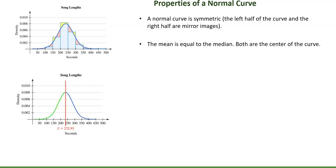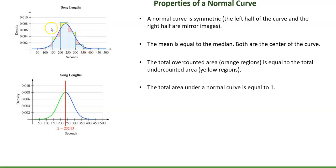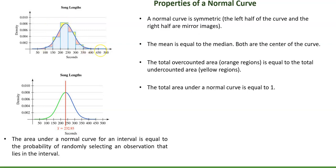In a symmetric distribution, the mean is equal to the median and both are at the center of the curve. If we think about how a normal curve can approximate a histogram, the total overcounted area — the empty space under the normal curve — is approximately equal to the total undercounted area sticking out of the curve. This helps us understand why the total area under the normal curve equals one.